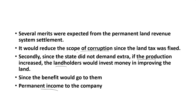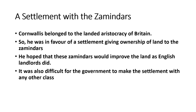Thirdly, since the land tax was fixed permanently, it would provide a permanent income to the British even during natural calamities like flood or drought. In other settlements, the Company and the peasants shared the burden of crop failure. But under this settlement, crop failure did not affect the English East India Company — even during natural calamities, the peasants were required to pay the fixed amount of tax.